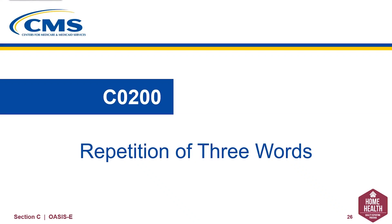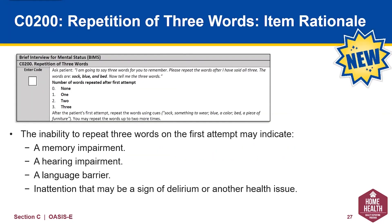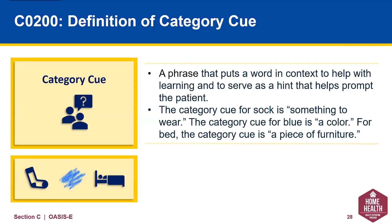Now let's get into the specifics of C0200, repetition of three words. C0200 starts by asking the patient to repeat three words: sock, blue, and bed. The inability to repeat three words on the first attempt may indicate a memory impairment, hearing impairment, language barrier, or inattention that may be a sign of delirium. A category cue is a phrase that puts the word into context: 'something to wear' for sock, 'a color' for blue, and 'a piece of furniture' for bed.